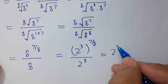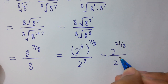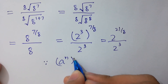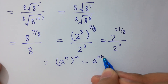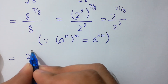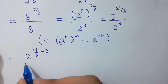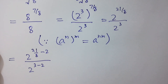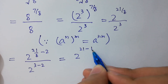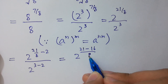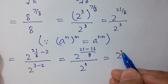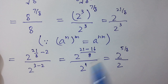So we have 7 times 3 equals 21 over 8, divided by 2 cubed, since a to the power n to the whole power m equals a to the power n times m. In the next step, we can write 2 to the power (21/8) minus 2, divided by 2 to the power (3 minus 2). This gives us (21 minus 16) over 8, which equals 5 over 8, divided by 2.